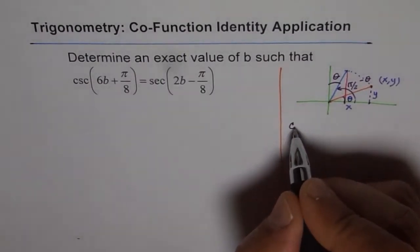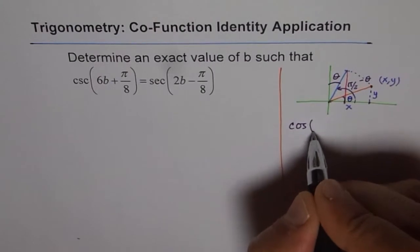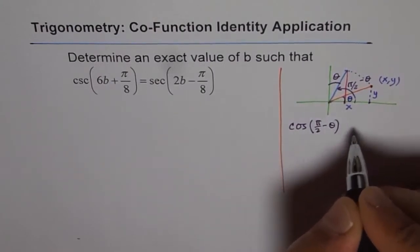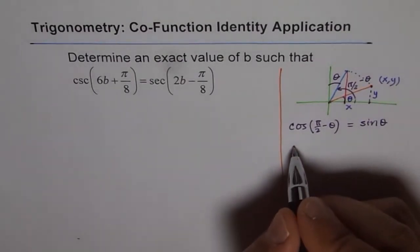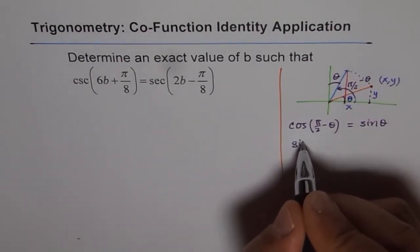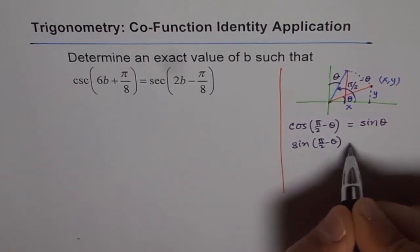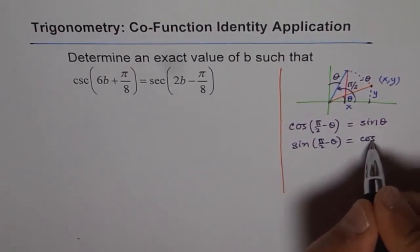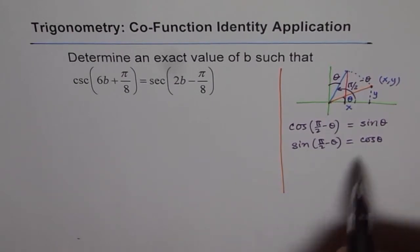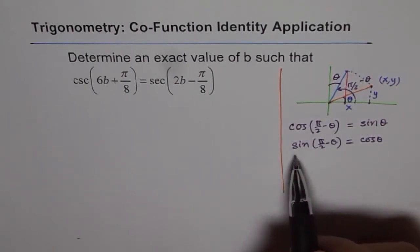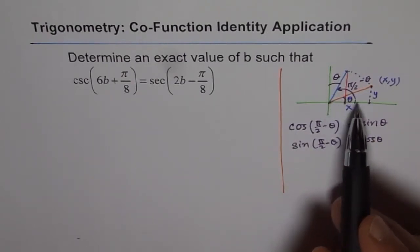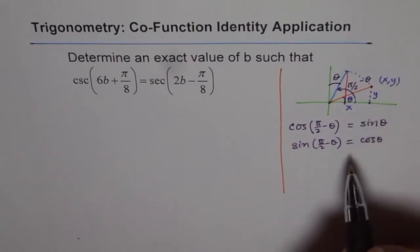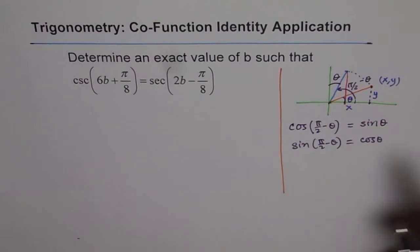What we notice is that cos of π by 2 minus theta becomes equals to sine theta. Similarly, sine of π by 2 minus theta becomes cos of theta. Cos and sine are co-functions, and they interchange when sine changes to cos and cos changes to sine for a triangle in which the primary angle is theta and π by 2 minus theta.